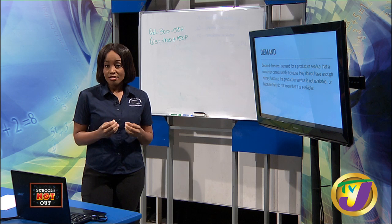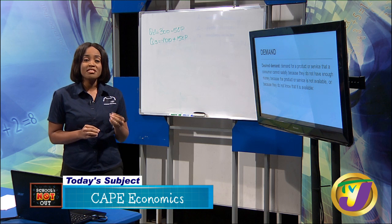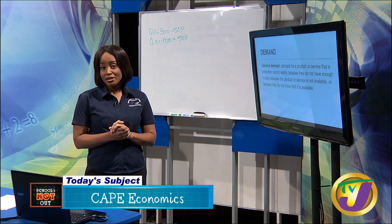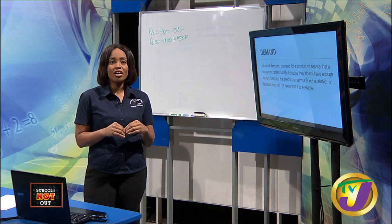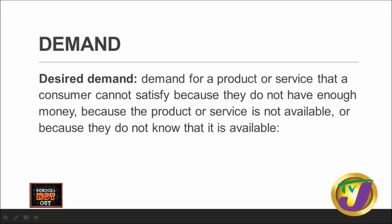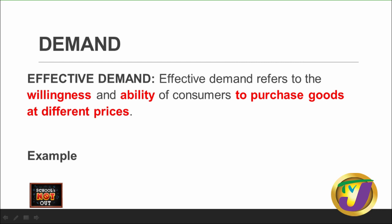For instance, I would like a new lipstick — do I have the money to purchase this lipstick? My desire to purchase the lipstick is called desired demand. If I don't have the cash to purchase it, then it means that I only wish to acquire the good but am not able to afford it. On the other hand, effective demand — which is the demand we typically refer to in economics — refers to the willingness and ability of the consumer to acquire the good or service. So I want a lipstick and I also have the money to acquire it.